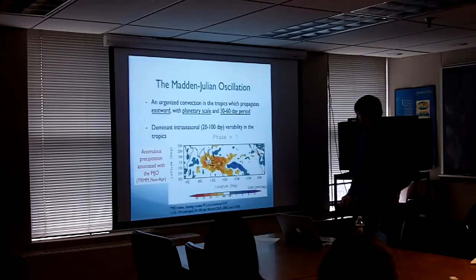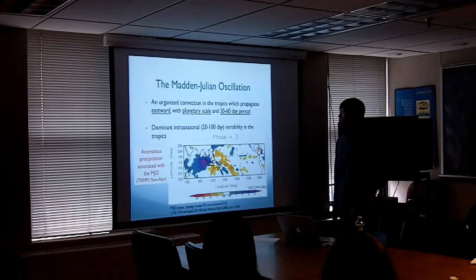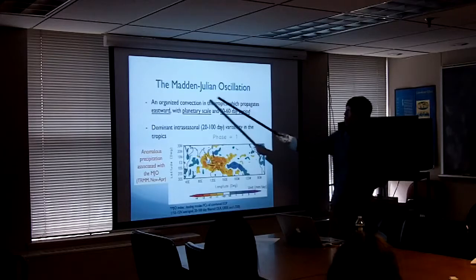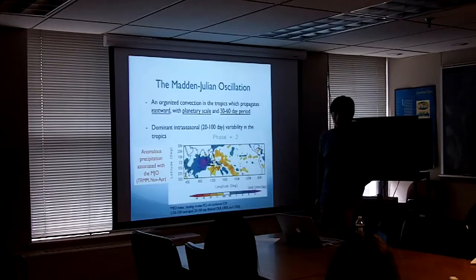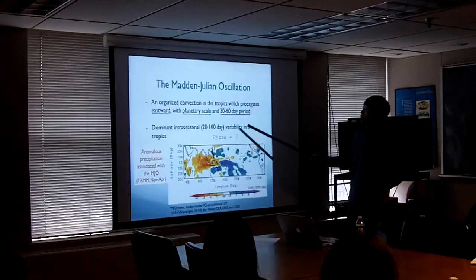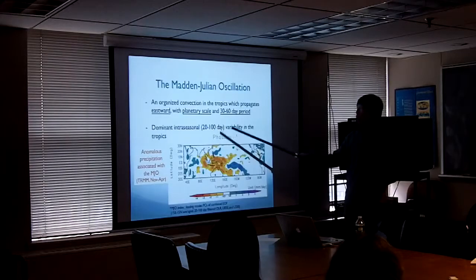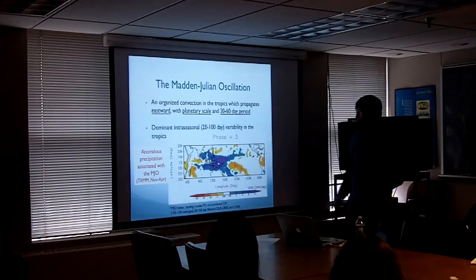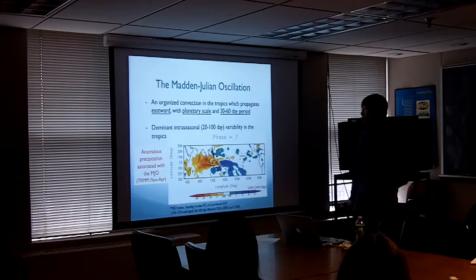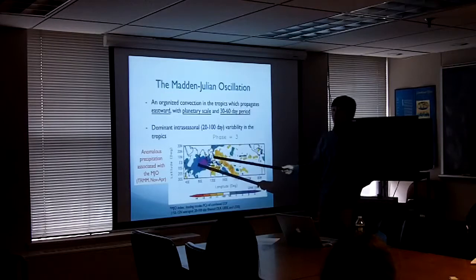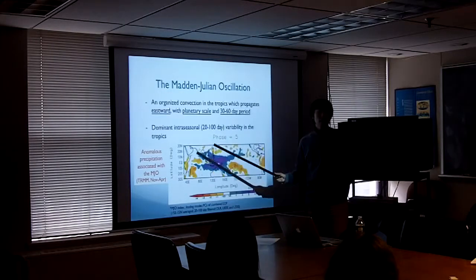Let me first give some brief introduction to the MJO for those who are not familiar with this. MJO is the Madden-Julian Oscillation discovered by Dr. Madden and Dr. Julian in 1971. It is an organized convection in the tropics which propagates eastward with planetary scale and a 30 to 60 day period. This variability explains about half of total sub-seasonal timescale variability in the tropics.